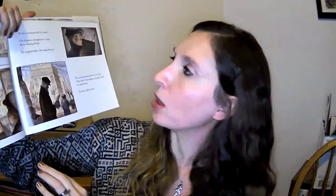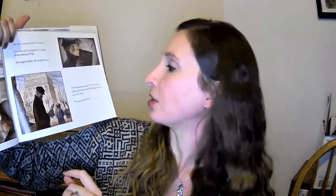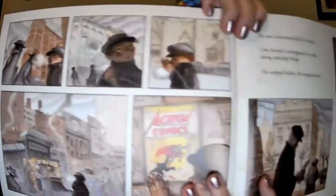He saw a newsstand full of comics. One showed a strong man in a cape doing amazing things. He stopped bullets. He stopped trains. The newsstand man held out his hand. Oscar didn't have any money, so he gave back the comic book. The man called to him. Keep it, kid. Merry Christmas. Oscar clutched his gift to Superman and he heard his father's words. You have to look for the blessing.